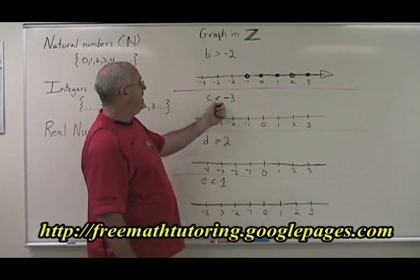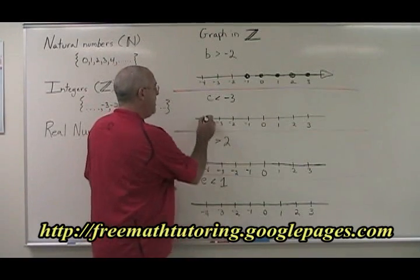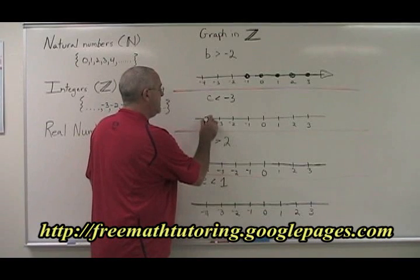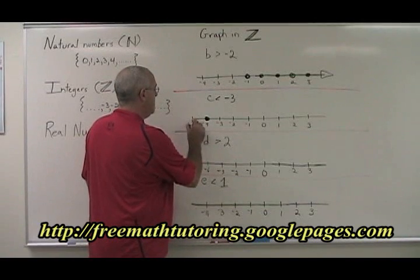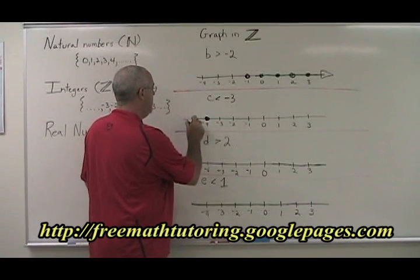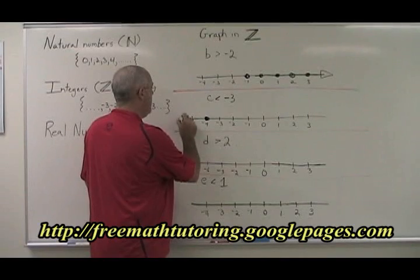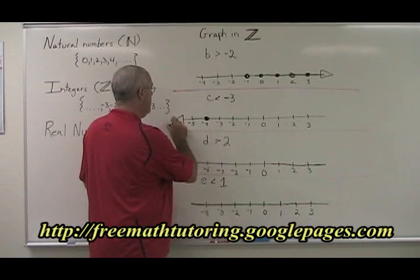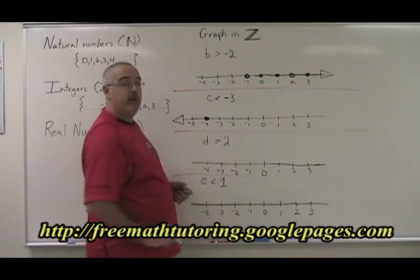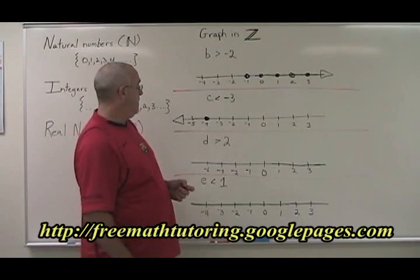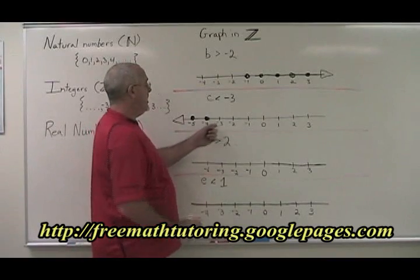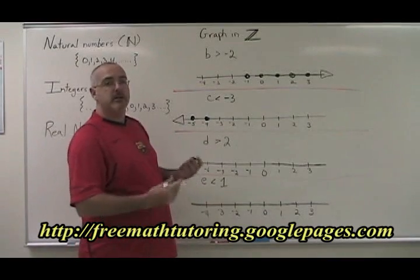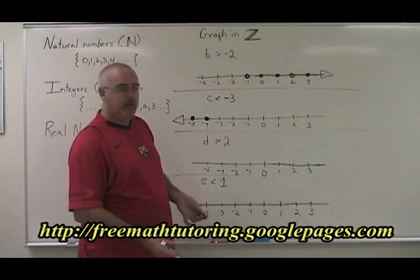C less than negative 3. Negative 4 is less than negative 3, and so is negative 5. I'm continuing onwards forever in the negative direction, but I cannot include negative 3 because it is not less than itself.